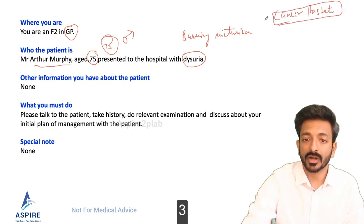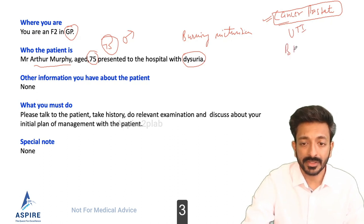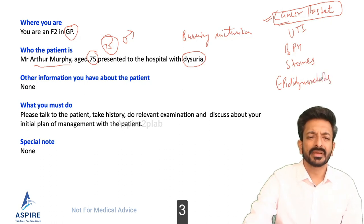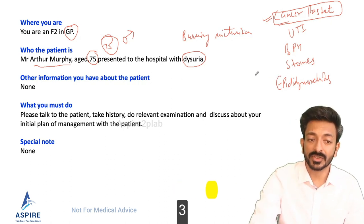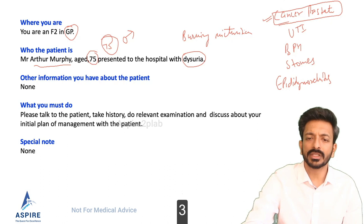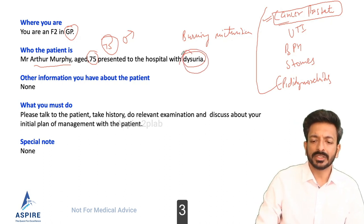We are going to make sure we are not missing cancer — that is a must. It might also be something simpler like UTI, BPH, ureteric stones, or epididymo-orchitis. Epididymo-orchitis is not very common but can occur. At age 75, you might also get a positive sexual history, though that is unlikely. These are the differentials we have in mind.